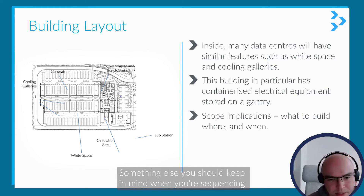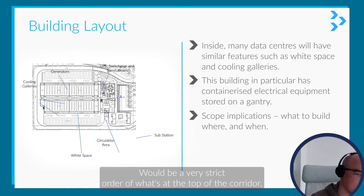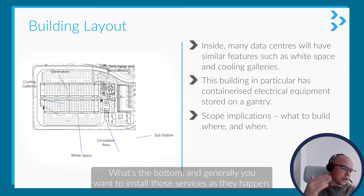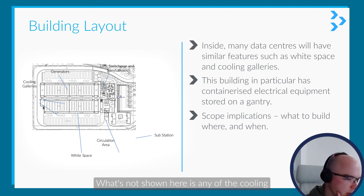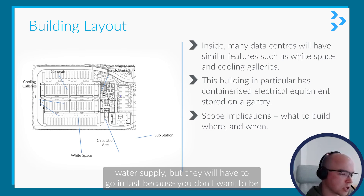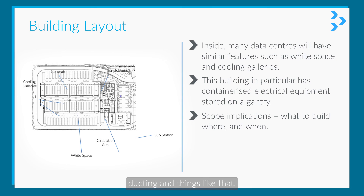Something else to keep in mind when sequencing is the cutaway on the right showing the corridor. There'll be a very strict order for what goes at the top and what goes at the bottom. Generally you want to install services as they happen — in this case, the smoke extract duct will be the first thing to go in. Cooling water supply goes in last, because you won't want to put it on top of your power cable distribution or other ducting.